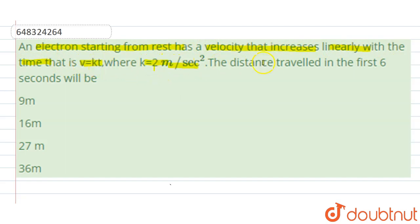The distance traveled in the first 6 seconds will be how much? The options are: 9 meters, 16 meters, 27 meters, and 36 meters. From the given data, we can say that velocity v = kt.